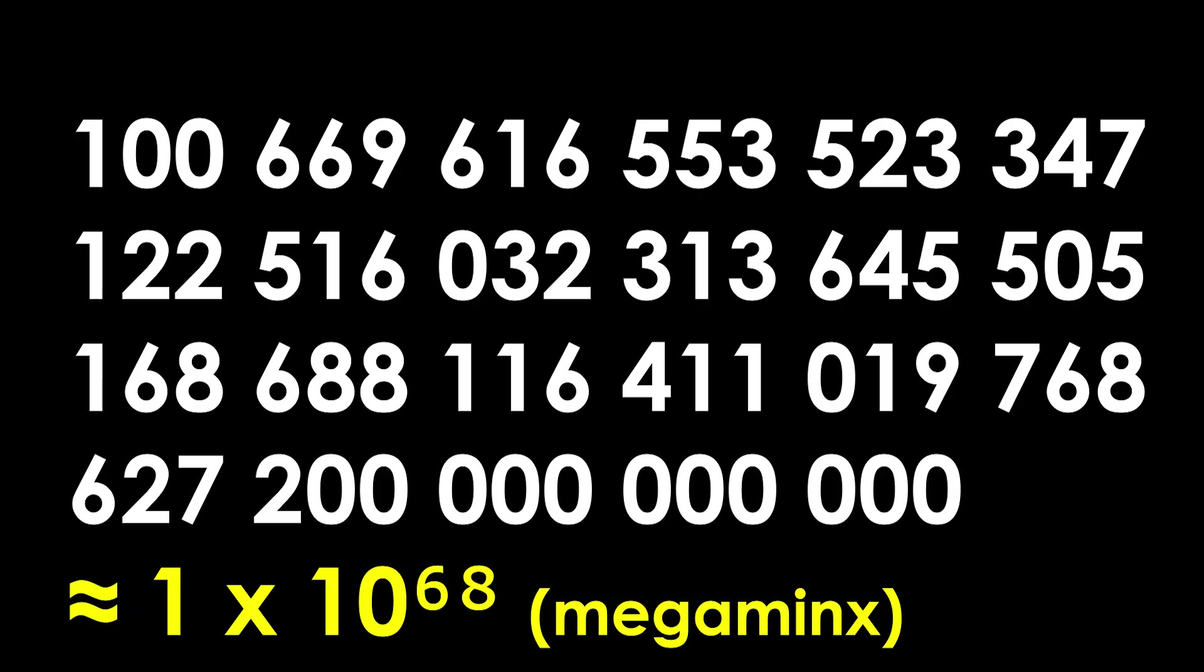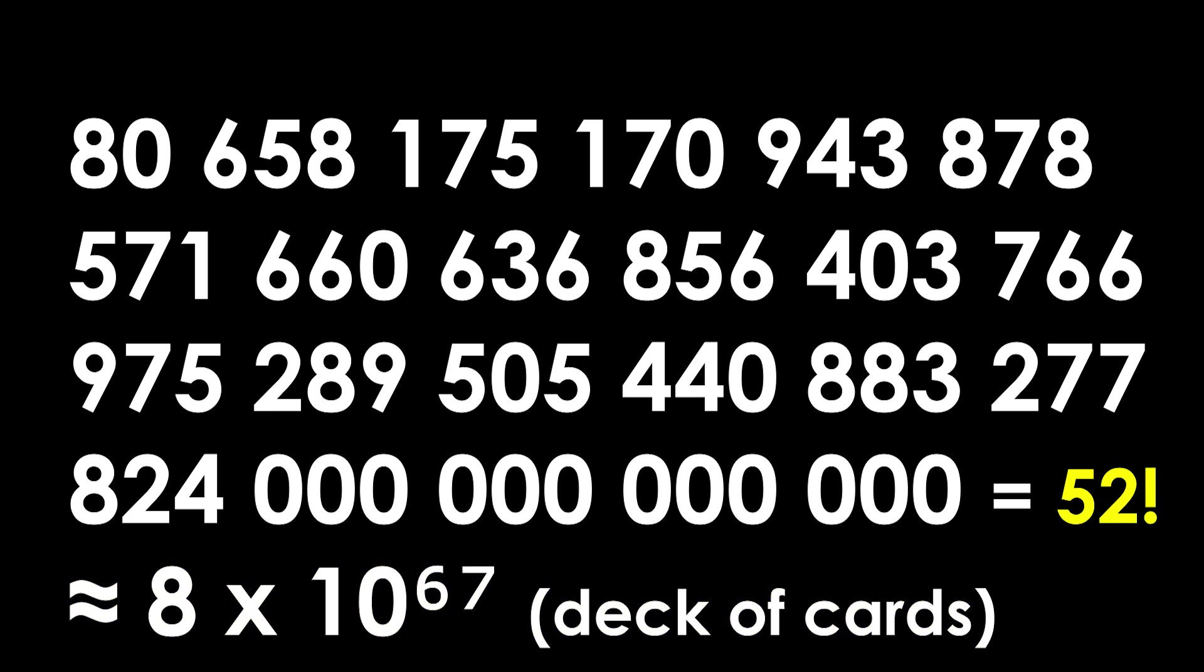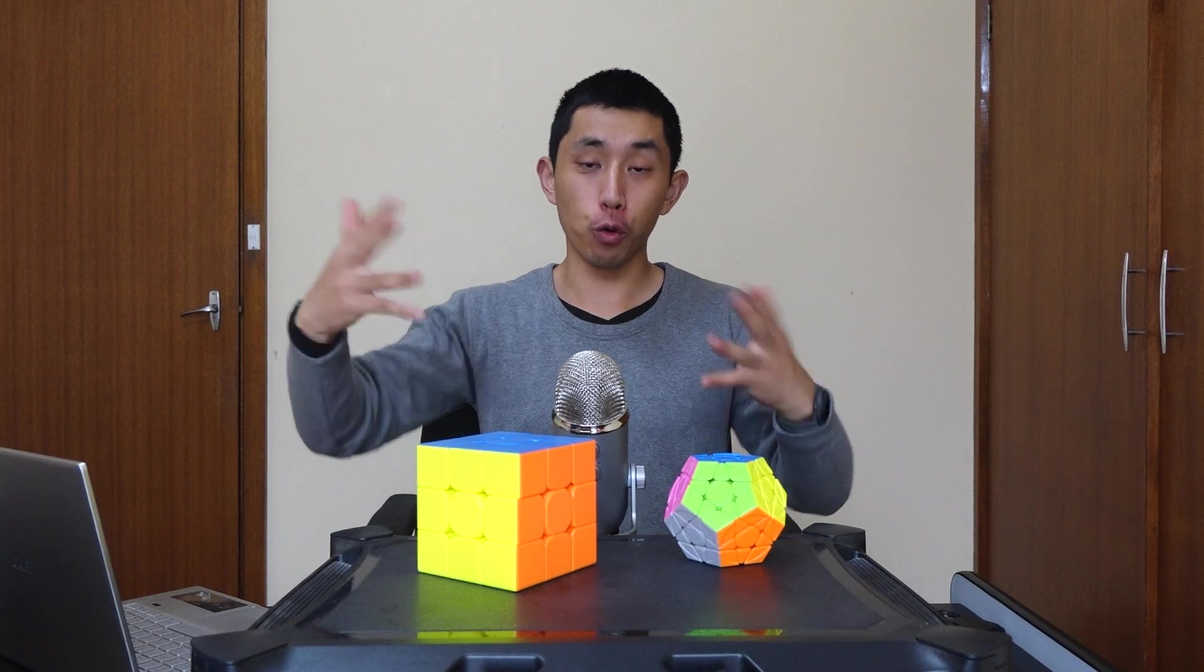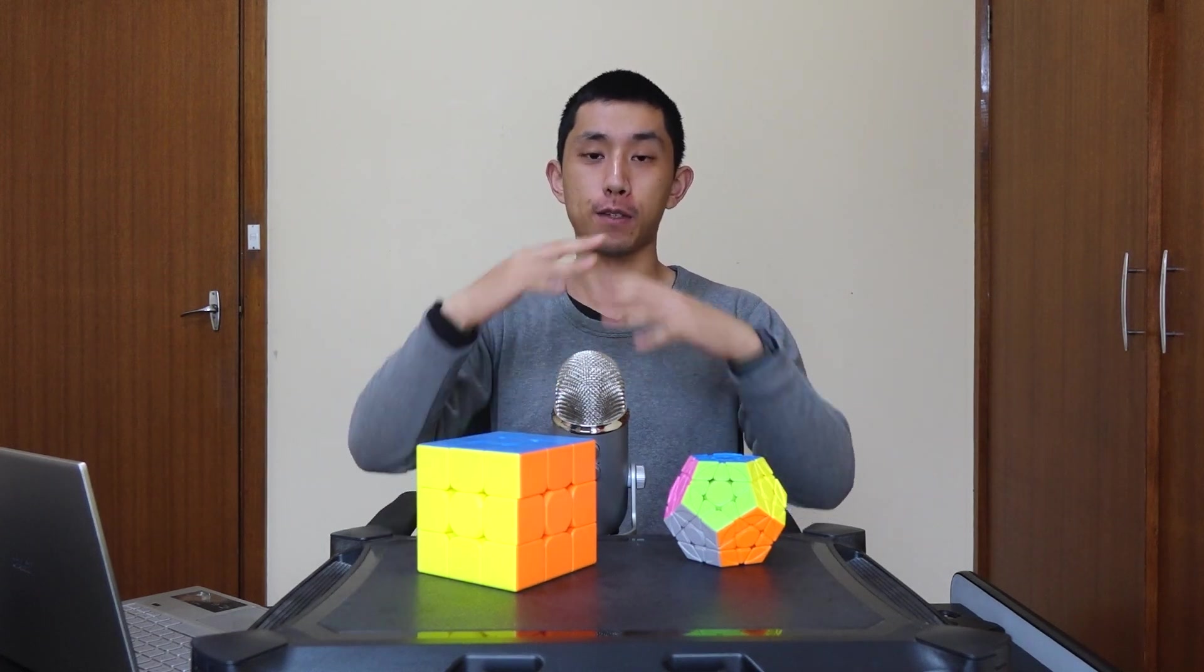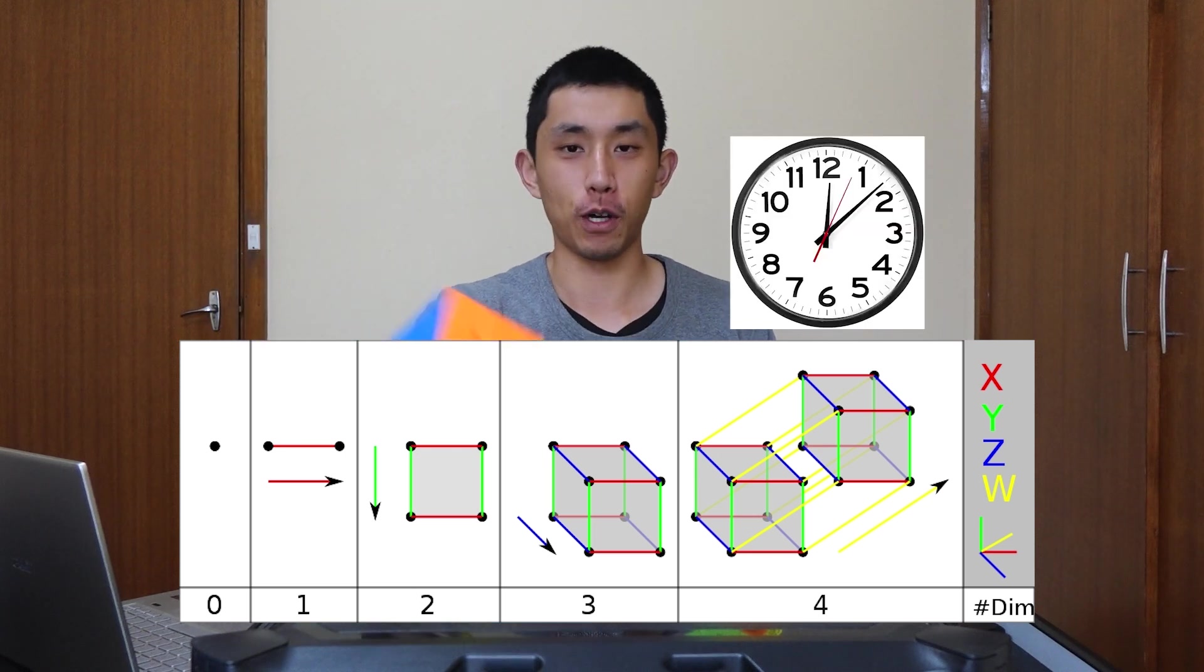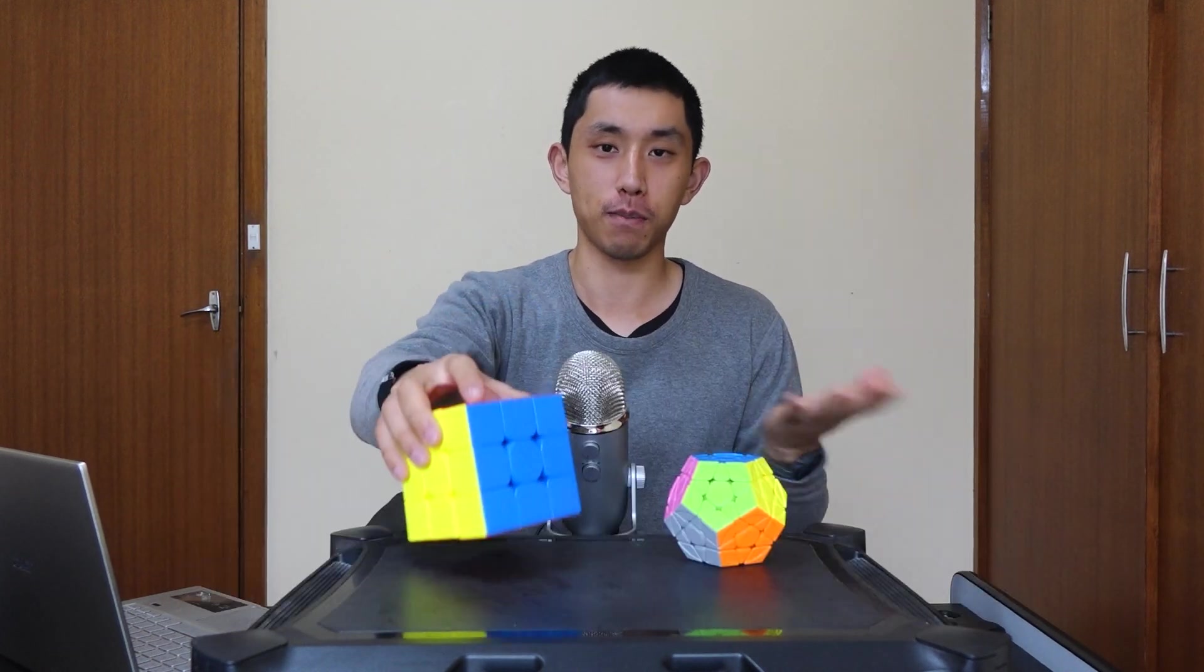This is somewhat close to the amount of ways you can shuffle a deck of cards, which is 52 factorial, or the amount of atoms in the galaxy we live in. Now we can get to the four dimensional Rubik's cube. To clarify, I'm talking about a cube that has four spatial dimensions. It's not like the fourth is time, otherwise you just get a normal Rubik's cube and that's boring.